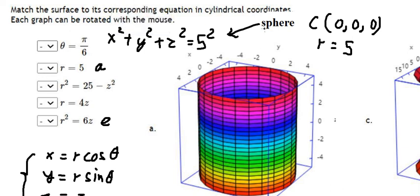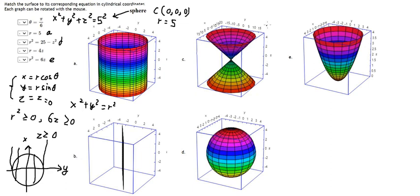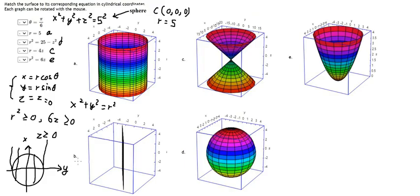So the answer for the sphere is D. The last one: r equals 4z. When z equals 0, r equals 0. When z equals 2, r equals 8. When z equals negative 2, r equals negative 8 — giving us an opposite cone shape. So that answer is B.